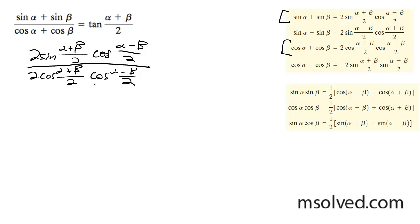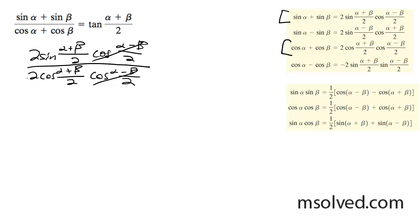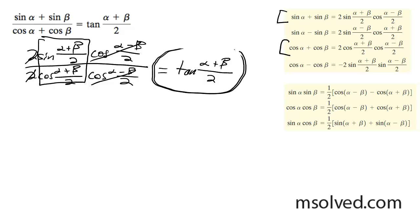So as you can see here, these two terms cancel out and we're only left with these terms here. Well, these two cancel out also, so we're left with this which is in the form of tangent, which leaves you with tangent of alpha plus beta divided by 2. That's it.